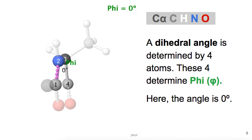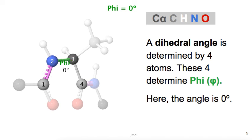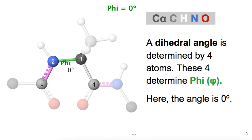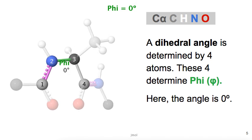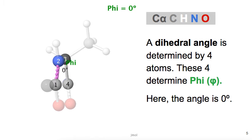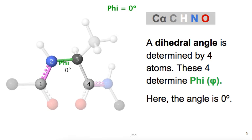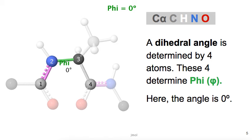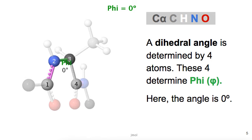A dihedral angle is determined by four atoms, numbered here, one through four. These particular four determine the phi angle. Notice the relative positions of atoms one and four when the angle is zero degrees.